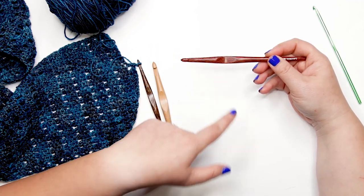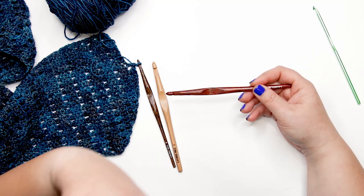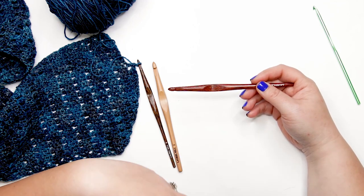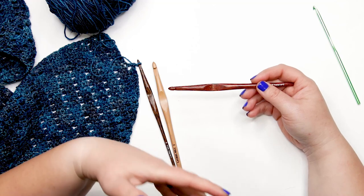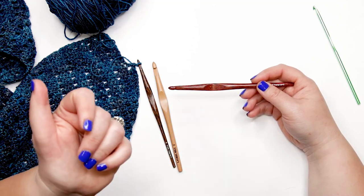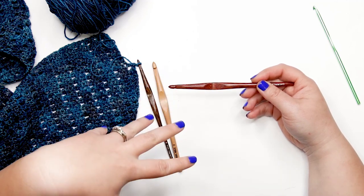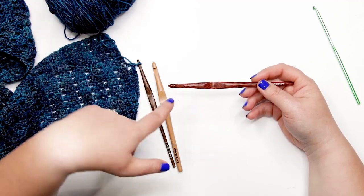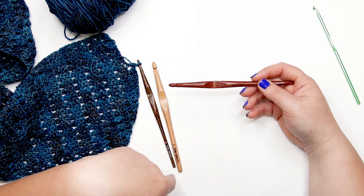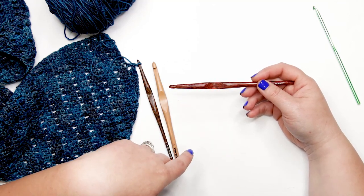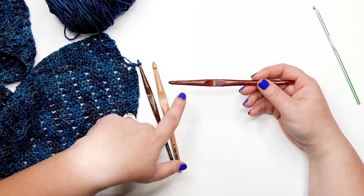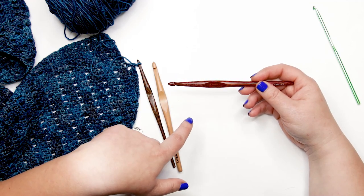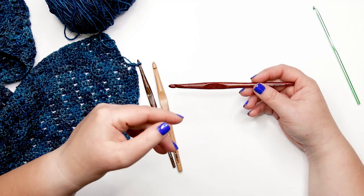But with the Laurel Hill hooks, they are tapered all the way up to the thumb rest. That does play into a change in your gauge potentially. It did for me. When I was crocheting with these hooks, I found that my stitches were looser than crocheting with a hook of the same size from a different type of hook. Because of that, you might have to play with what hook size you need to use in order to match gauge if you're used to using those straight hooks.